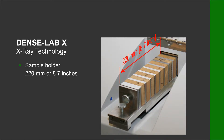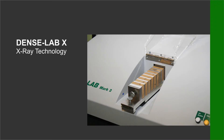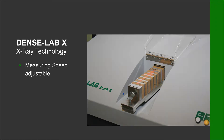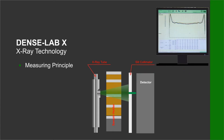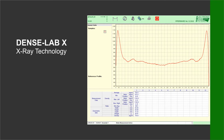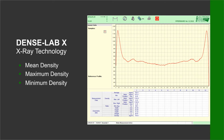The sample holder can carry 10 samples up to a total of 220 millimeters or 8.7 inches. A precision drive automatically feeds the samples inside for measurement. The measuring speed is adjustable. The mean density value will automatically be evaluated, along with the maximum and minimum density.